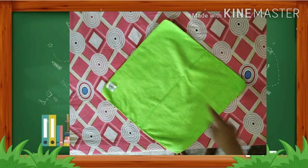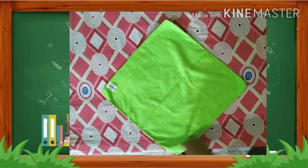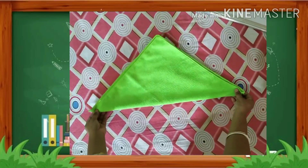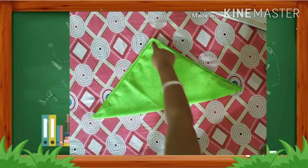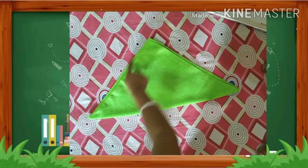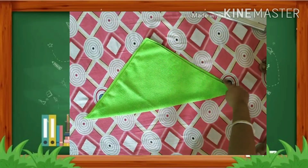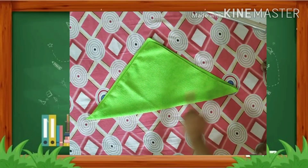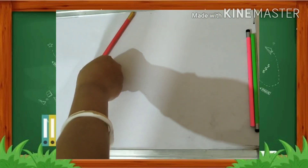Now let's make a triangle with the help of a handkerchief. Just hold the end of the handkerchief and fold it like this. See, the triangle is ready! It has three sides and three corners.